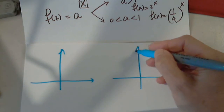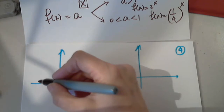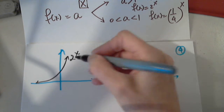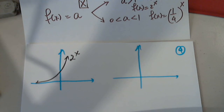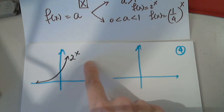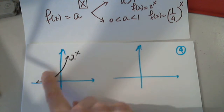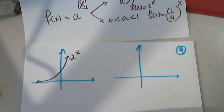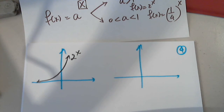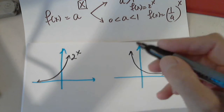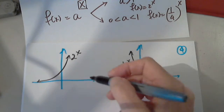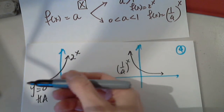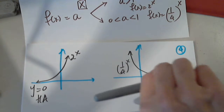If the base is greater than 1, like 2 to the x, the function is increasing on all its domain. Although we experienced exponential growth of infections during the pandemic — that's why they said flatten the curve, because the number of infections per day was increasing exponentially. If the base is less than 1, like 1 fourth to the x, the graph decreases. Both functions have a horizontal asymptote — this one at negative infinity, and this one at positive infinity.